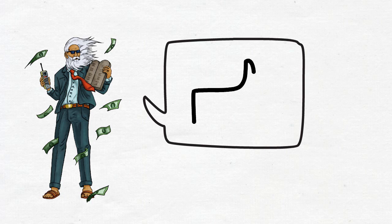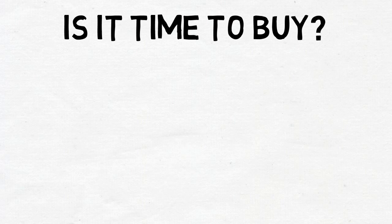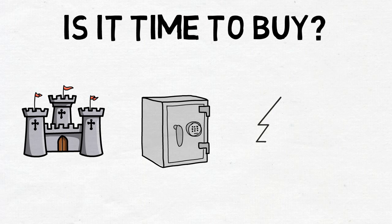Let's take a look at the pros and cons of this company right now. Now this new is it time to buy series differs from the old stock of the month as I'll be looking at four features of a stock: the moat, how safe is the dividend, catalysts, risks and threats. Let's start with the moat.